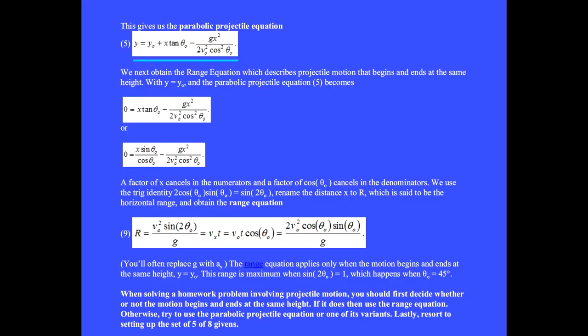Starting with equation 5, the parabolic relation between x and y, we next obtain the range equation, which describes projectile motion that begins and ends at the same height. With y equals y₀, these two cancel, and equation 5 becomes this, but tan θ is a sine over cosine, so we get this equation.